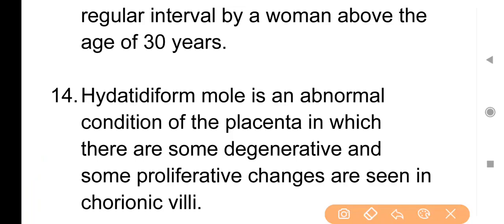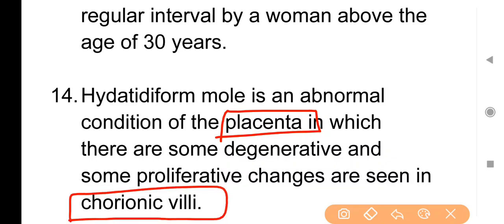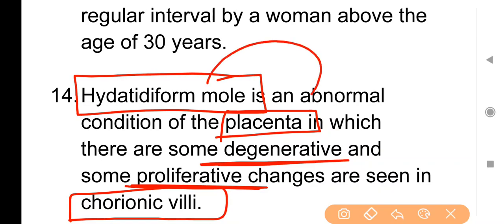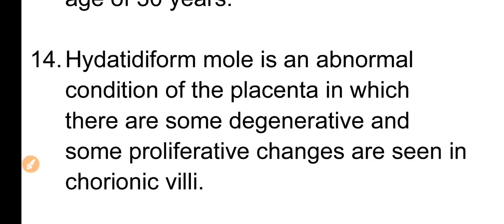Point No. 14: Hydatidiform mole is an abnormal condition of the placenta in which there are degenerative and proliferative changes seen in chorionic villi. Placenta वह structure है जो बच्चे को गर्भ में mother से जोड़ता है और nutrient supply करवाता है। अगर इस placenta के chorionic villi में abnormal changes — चाहे proliferative हों या degenerative — आ जाएं, तो इस condition को hydatidiform mole कहते हैं। यह important है।